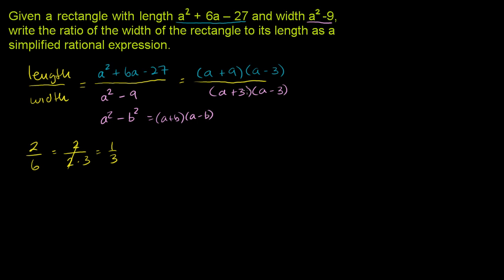We see a term common to both numerator and denominator: a minus 3. We can divide the numerator and denominator by a minus 3, and they cancel out. A minus 3 divided by a minus 3, assuming a is not equal to 3 (which would be undefined), equals 1.